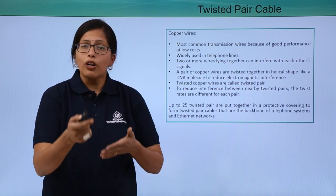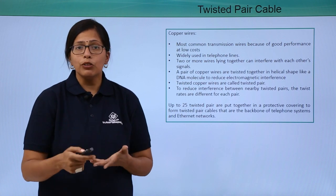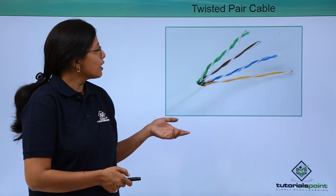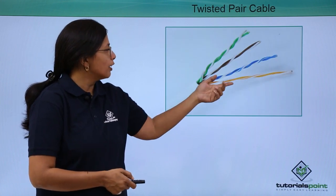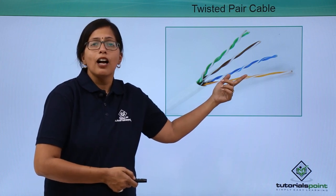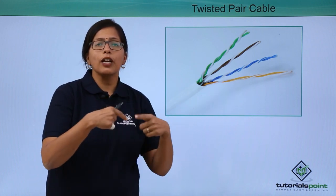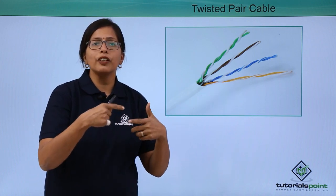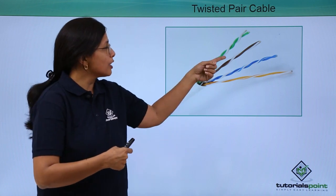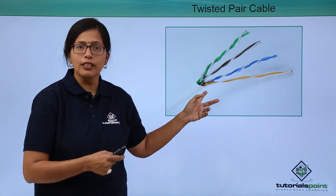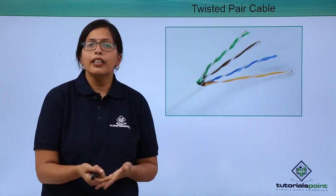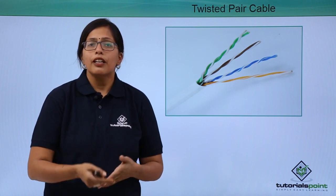So what is to be done about that? What we can do is twist the wires together, as you can see in this image. Two wires are twisted together in the form of a helical shape — the DNA shape. When this twisting occurs, the electromagnetic interference reduces.